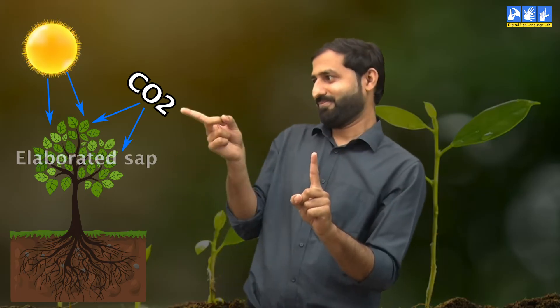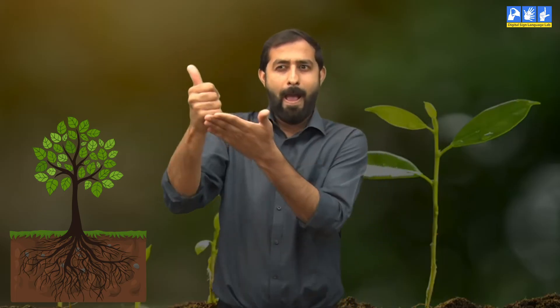This is how plants get energy to grow through the photosynthesis process. The food that is prepared during this process is called elaborated sap, which helps the plant to grow well. Now we know that sunlight is very important for the growth of the plant. Can photosynthesis occur at night? No. Photosynthesis happens only during the day because plants need sunlight.